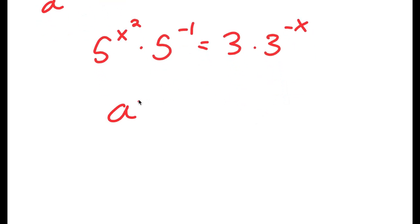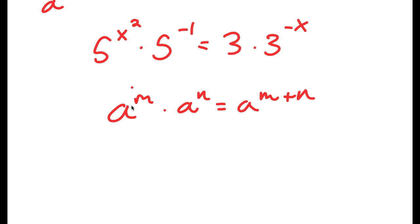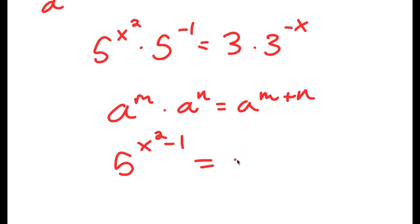Now, if I have something in the form a to the power of m times a to the power of n, this is equal to a to the power of m plus n. So in this case, I get 5 to the power of x squared minus 1, and this is equal to 3 to the power of 1 minus x.